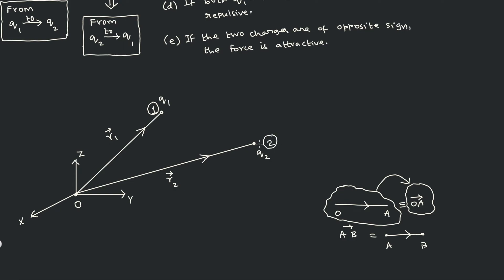On point number 2 you have the charge q2 — that is point 2 at which place charge q2 is placed. Connect the two charges q1 and q2 with one more line. Now you ask: how to put the direction — from 1 to 2, or from 2 to 1? If it is q1 to q2, the arrow has to be drawn in that direction.